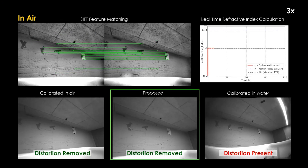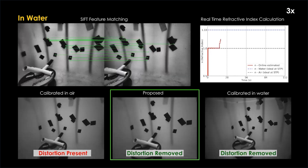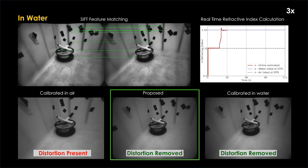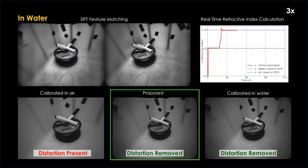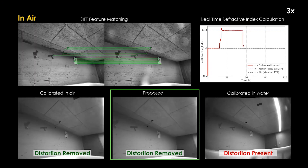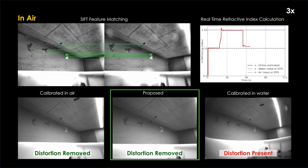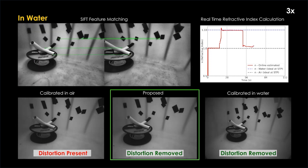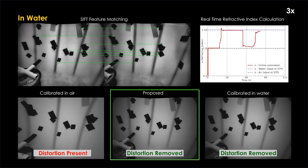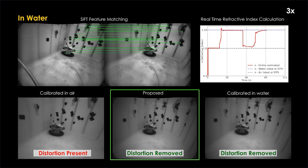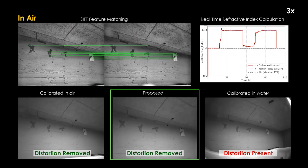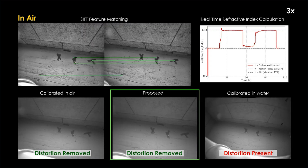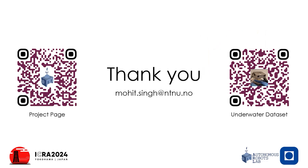The proposed method can adapt to drastic variation in the refractive index. This can be seen in an experiment where we transition the camera periodically from air to water. The estimated refractive index closely follows the ideal values of 1 for air and 1.33 for water. Thank you. Please visit our project page and check out our dataset.